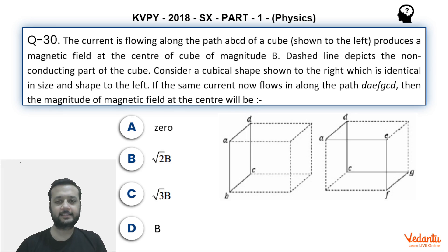Hi dear students, let's see this question that came in KVPY 2018 SX Part 1 Physics paper. Basically this question is from the topic of magnetism. We have to find the magnetic field in the second figure.